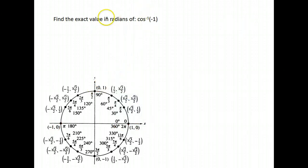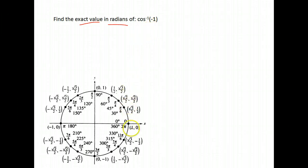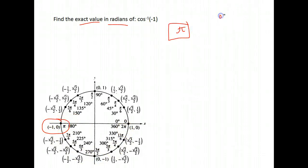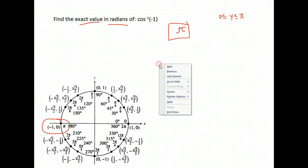Find the exact value in radians — no decimals — of the inverse cosine of negative 1. We're looking for where x on the unit circle equals negative 1, which is only one place. That's at angle pi. Cosine values must be between 0 and pi, and pi falls in that range, so pi is the correct answer.